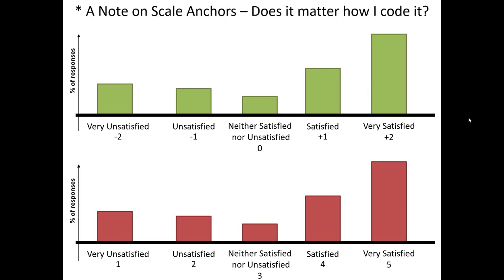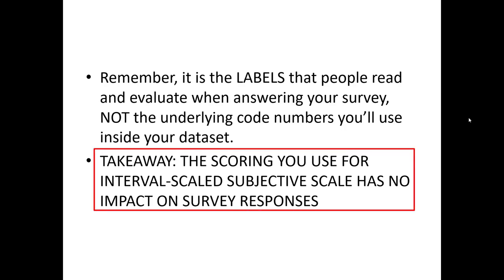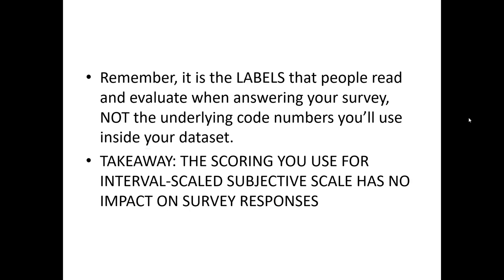In this example, the scales are exactly the same in terms of their labeling. The difference is the numerical values: the top option has a negative-2 to positive-2 scoring, and the bottom has a 1 to 5 scoring. What's the impact of shifting the scoring mechanism on how people respond? The answer is there really is none — the response pattern is the same. As discussed previously, it's the response labels themselves that people draw meaning from on interval-level scales. Therefore, the underlying scoring mechanism is irrelevant from the perspective of how survey respondents will interact with the question.